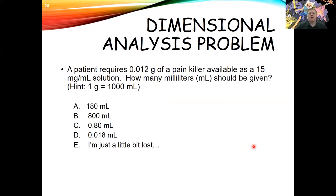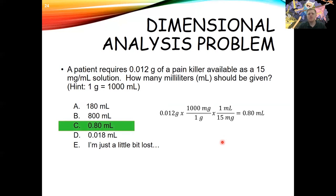One last practice problem: a patient requires 0.012 grams of a painkiller available as a 15 milligram per mL solution. How many milliliters should be given? Convert 0.012 grams to milligrams by multiplying by 1000 milligrams per gram, then multiply by the factor of 1 mL per 15 milligrams (the inverse of 15 mg/mL). The answer is 0.8 milliliters.